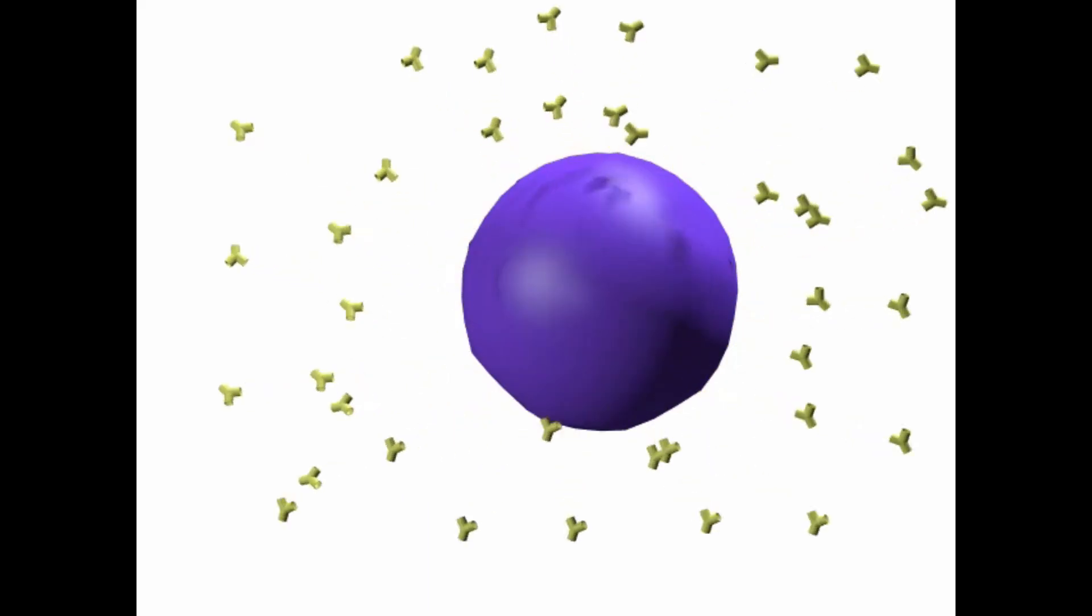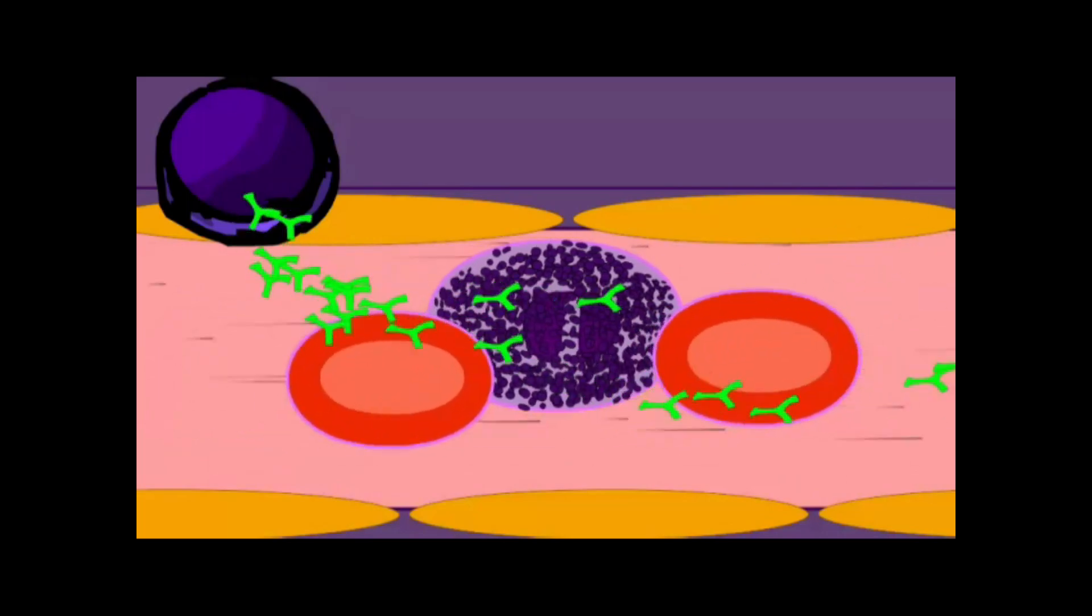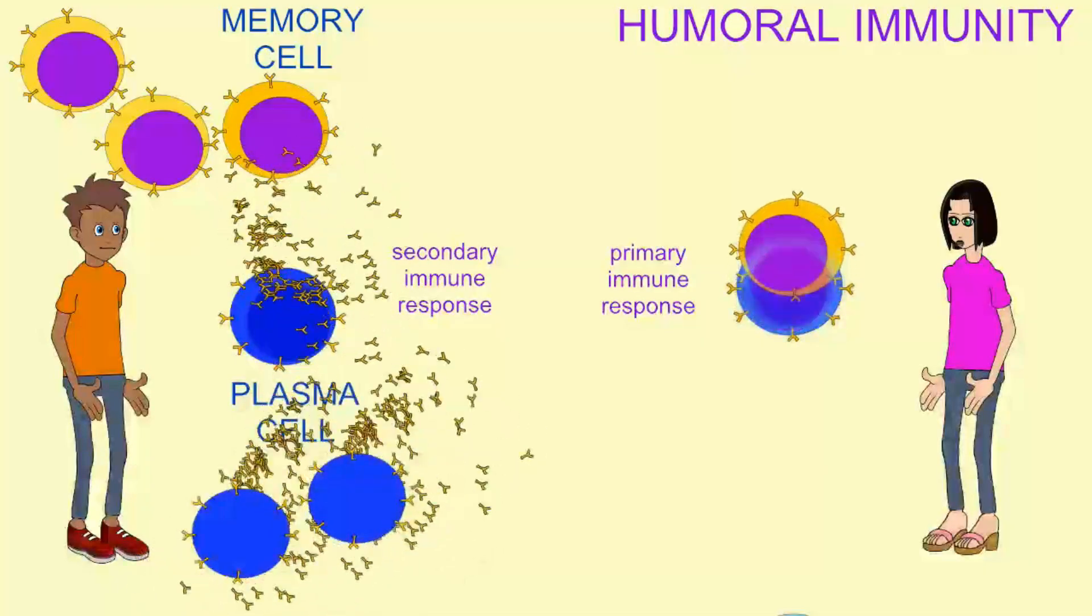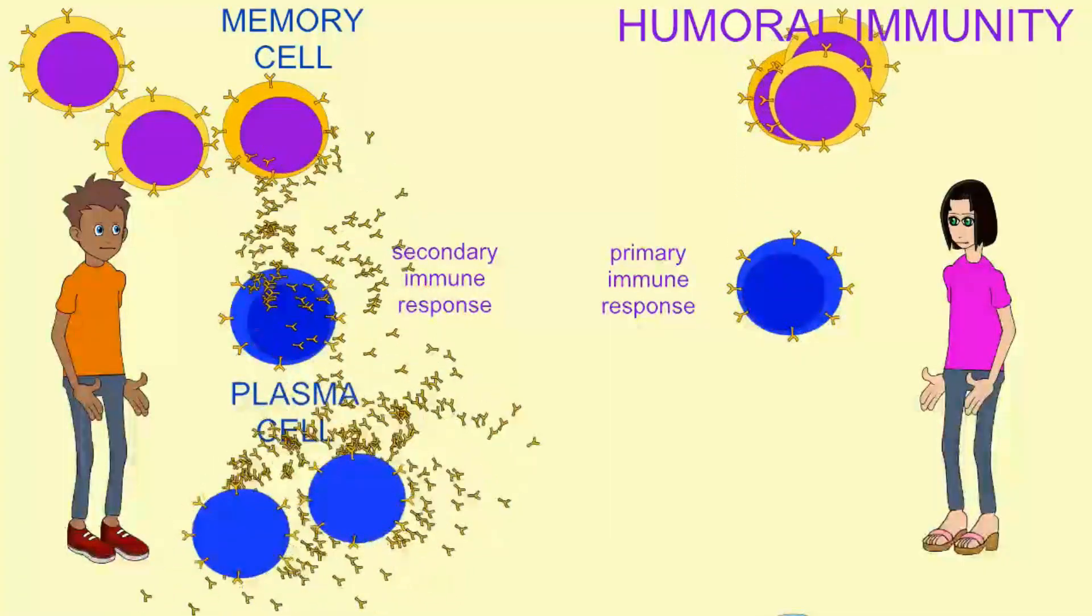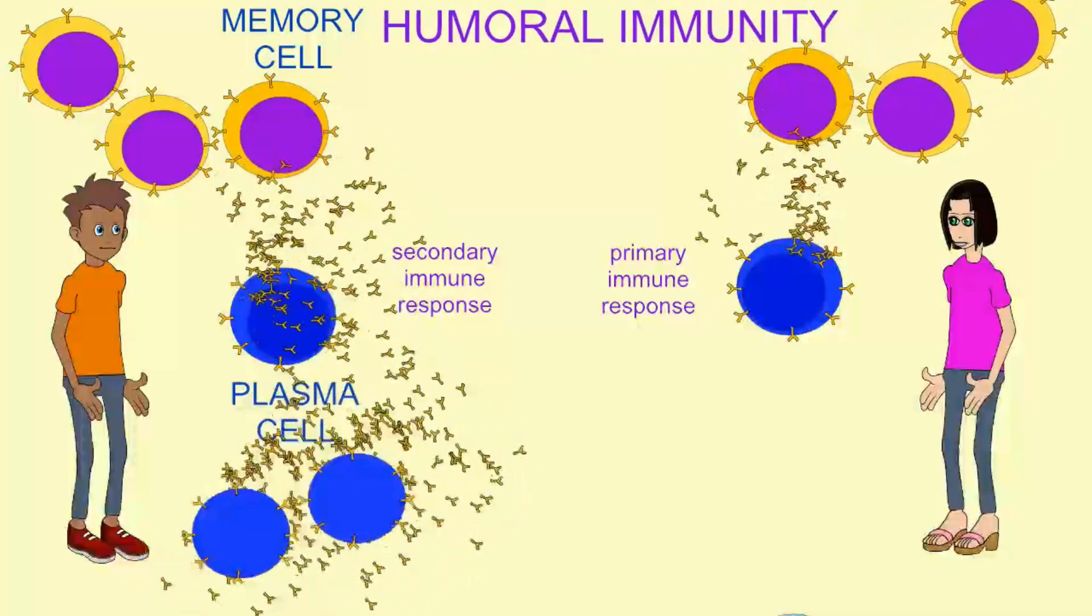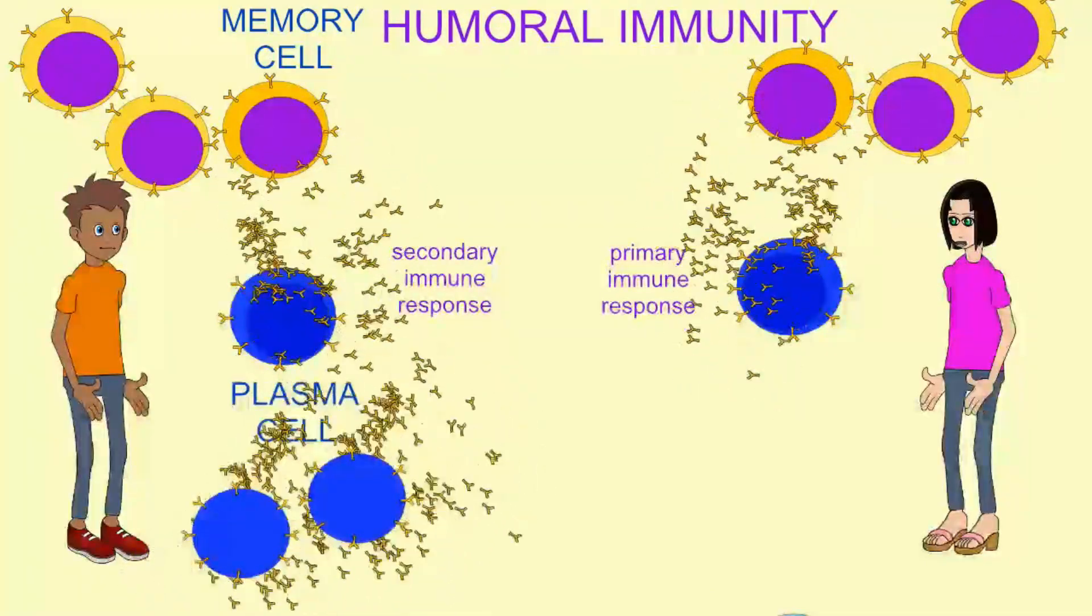The B lymphocytes produce antibodies which are very specific ways of fighting a specific antigen. Together they function in the adaptive immunity through which our immune system better reacts against pathogens it has previously encountered.